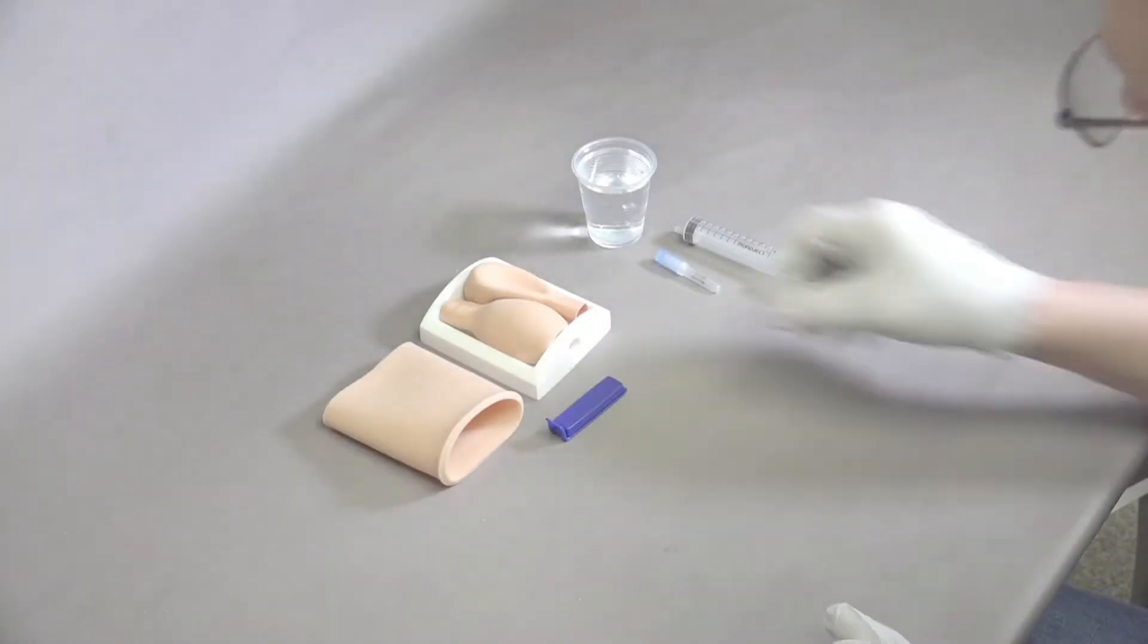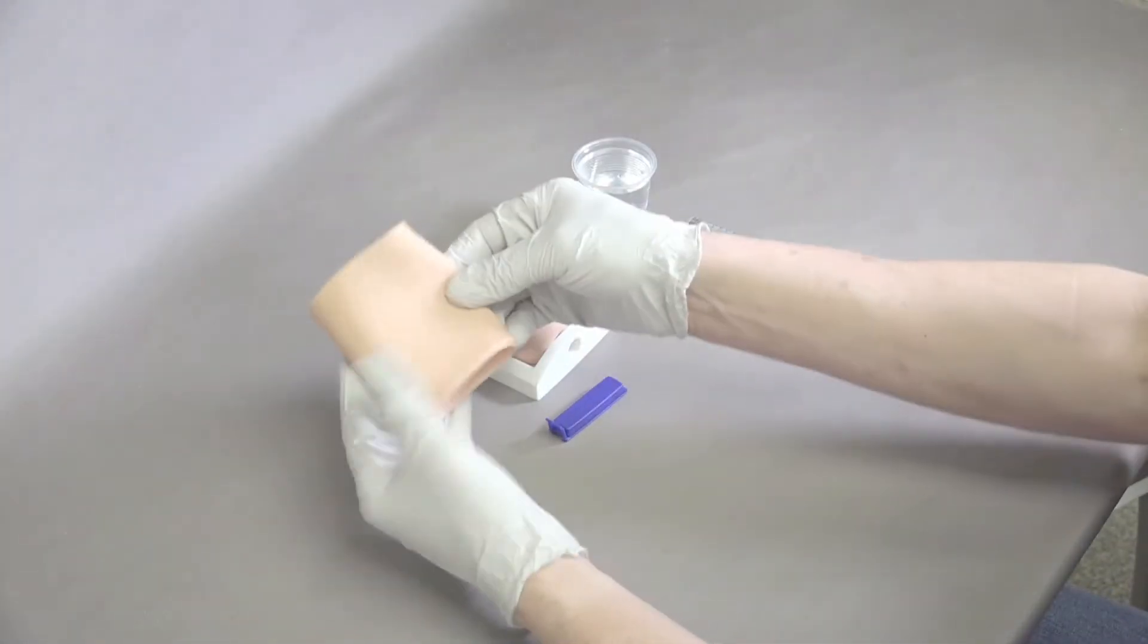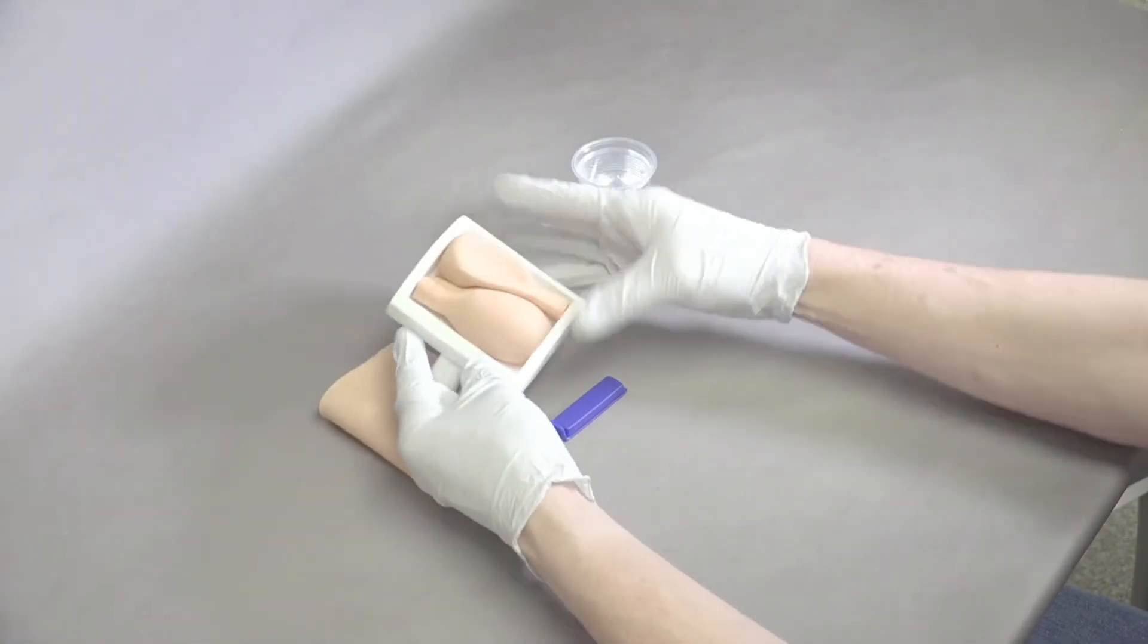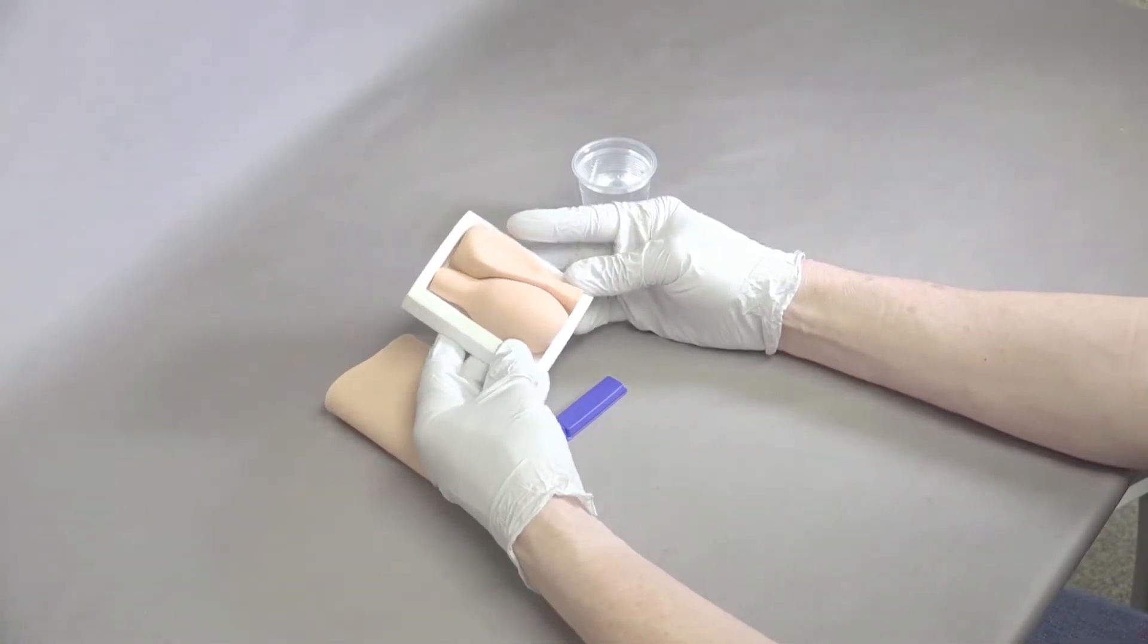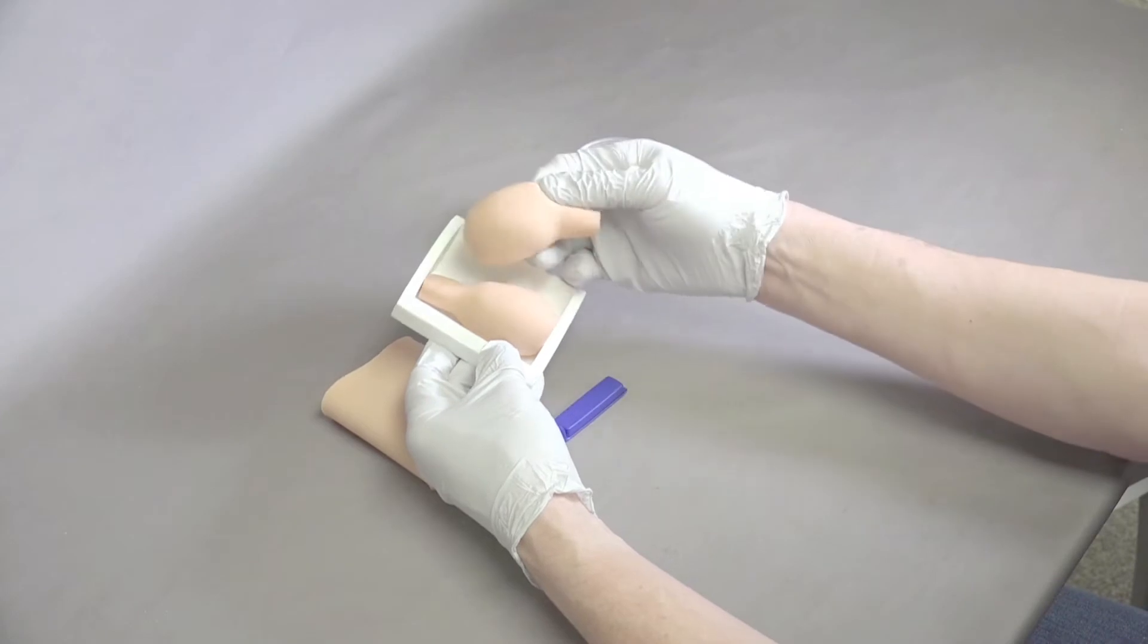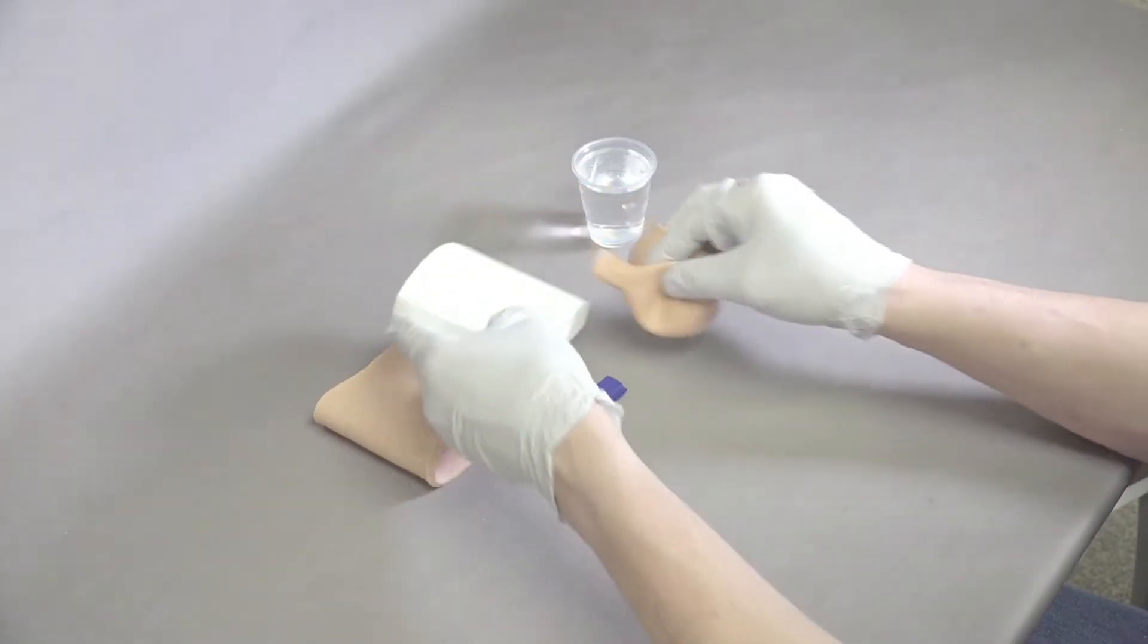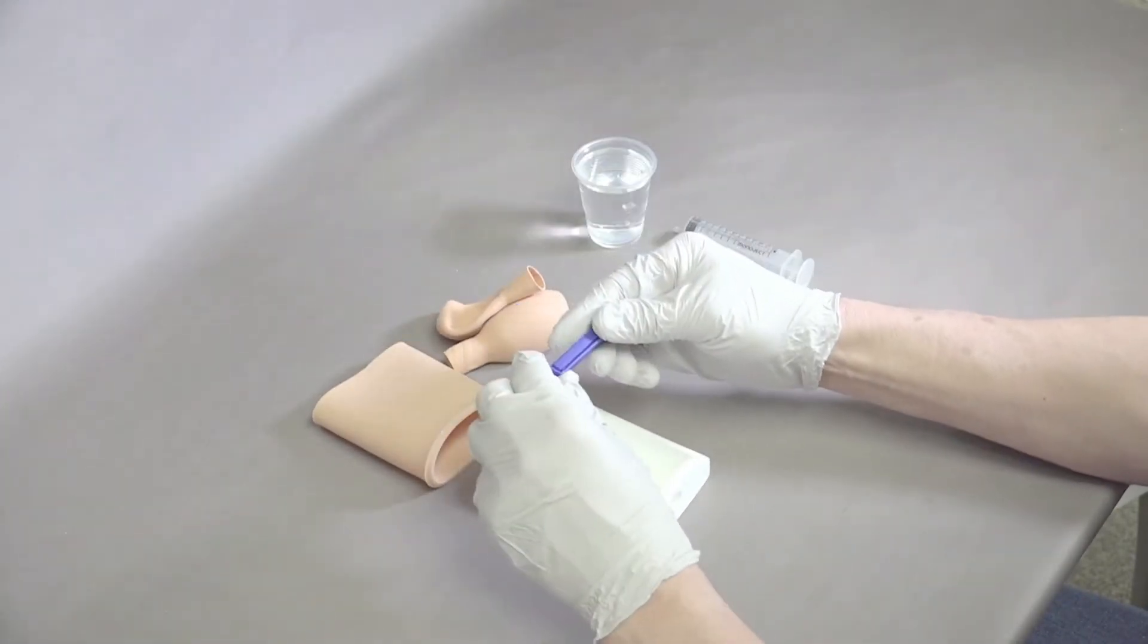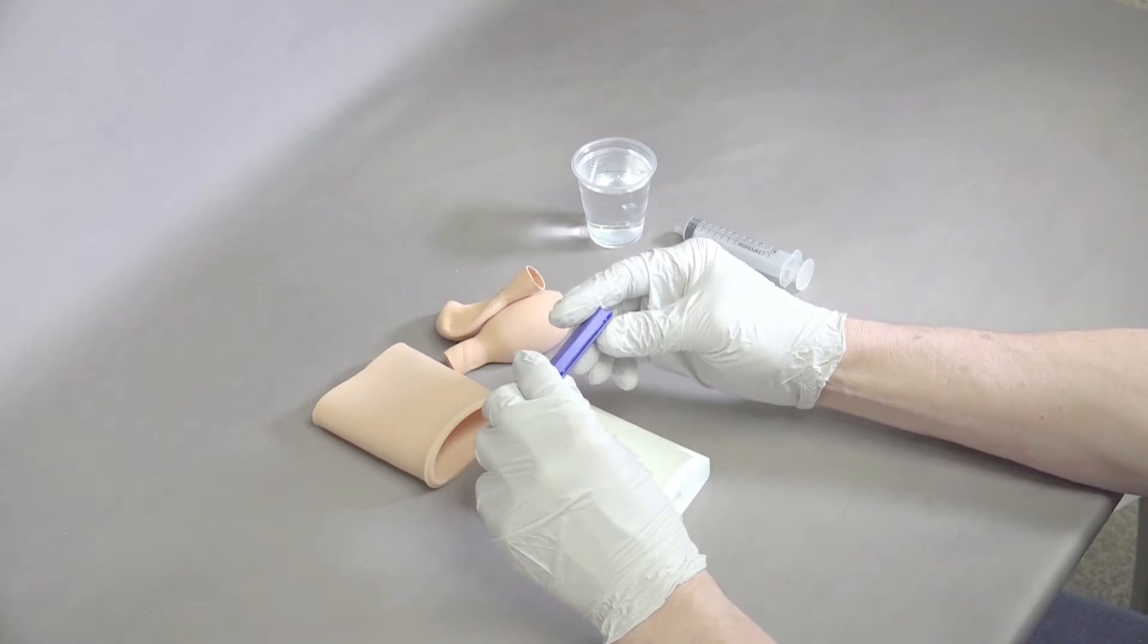This cystocentesis model comes with a skin that goes over the top, a plastic sleeve or reservoir, two bladders, and a clip that will keep the fluid in the bladder.